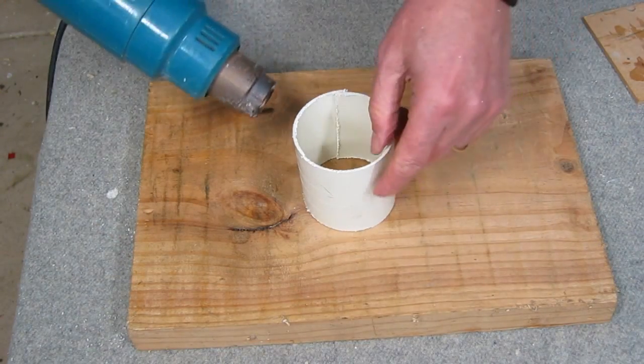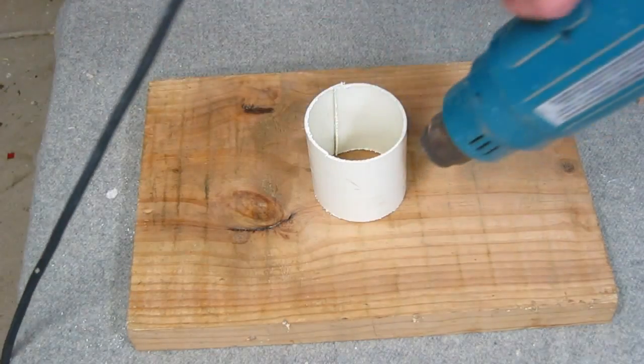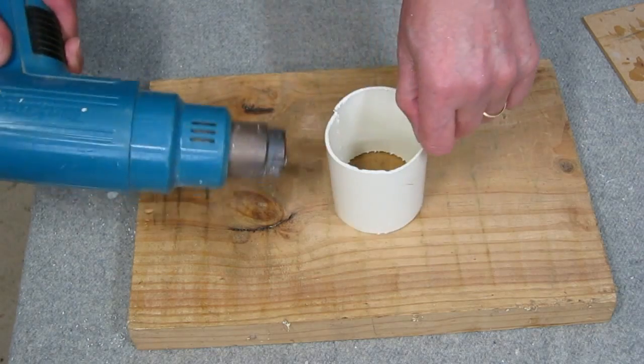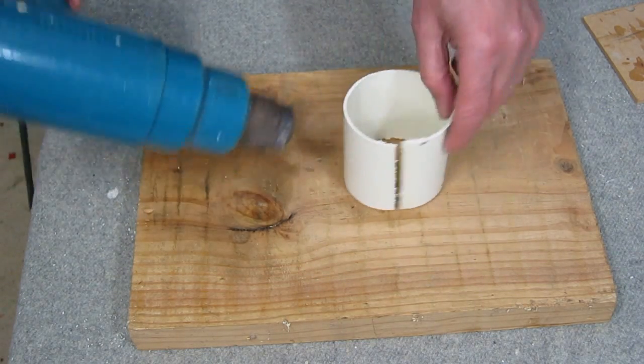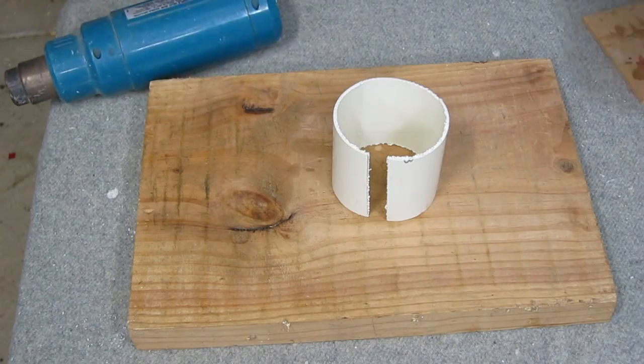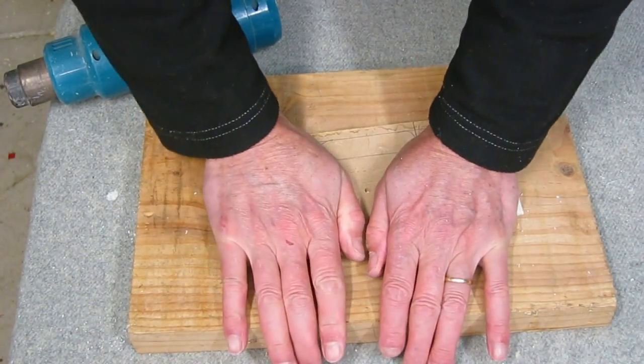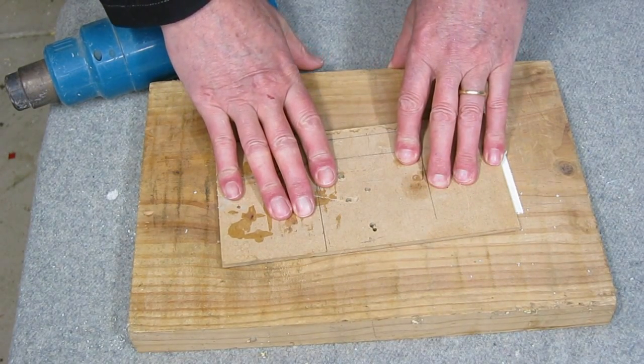With a paint stripping heat gun, it only takes about 20 seconds to make this 1.5 millimeter thick PVC pliable enough to flatten it out. It does get reasonably hot, so you really need something flat like a piece of fiber board or timber to help flatten it out until it cools down.